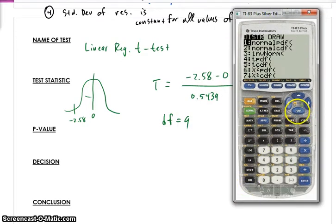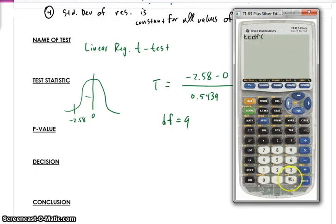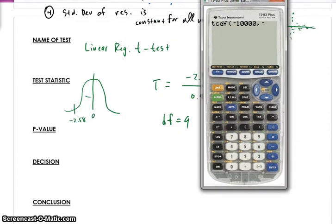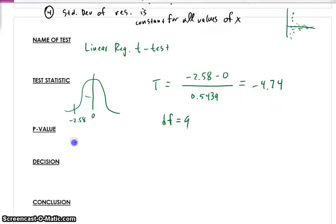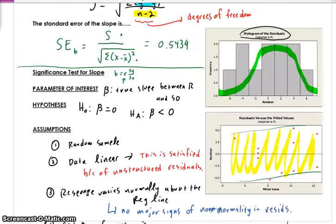We're going to use tcdf. So we're going to go to distribution. We're going to go to tcdf. We're going to do negative, hella big number, comma negative, what is this, 4.74, comma 9. And I get a p-value of 5.29 times 10 to the negative 4th. So 0.0000529 is the p-value, which is really, really small.